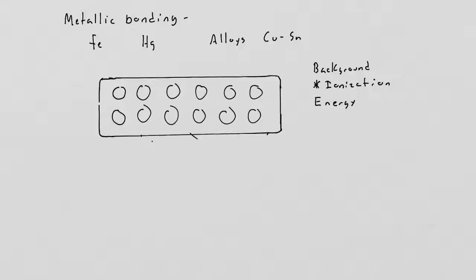This video is on metallic bonding. Metallic bonding occurs between atoms of a pure metal, like solid iron or mercury, which is the only liquid metal at room temperature, or even between the atoms of an alloy.